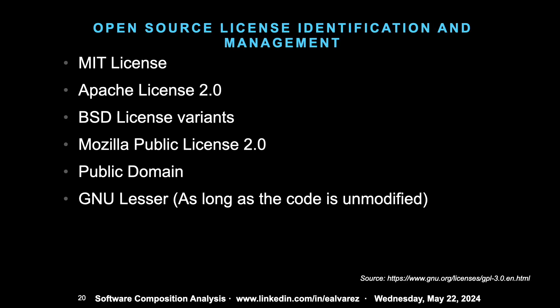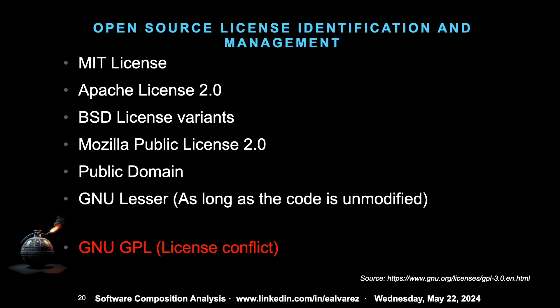We'll take a look at open source management licensing done by SCA. There are traditional licenses like MIT, Apache, and BSD — these are fairly innocuous, business-friendly licenses. You can use these licenses, though you may have some attribution requirements. Others like GNU LGPL allow you to use the code unmodified, but if you modify it you need to contribute and open-source the project. The issue comes from conflicts with GNU GPL, which can cause quite a little time bomb.